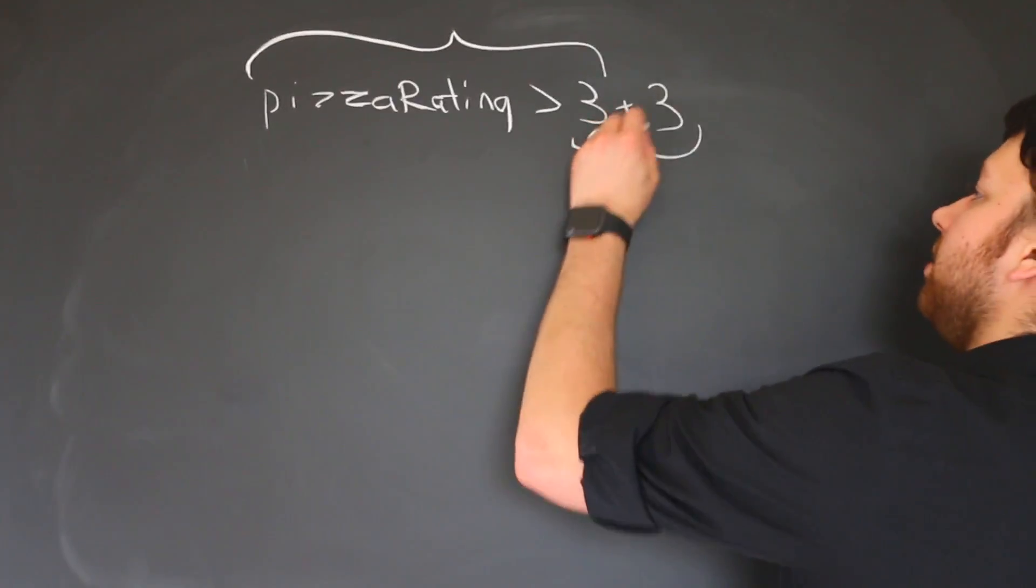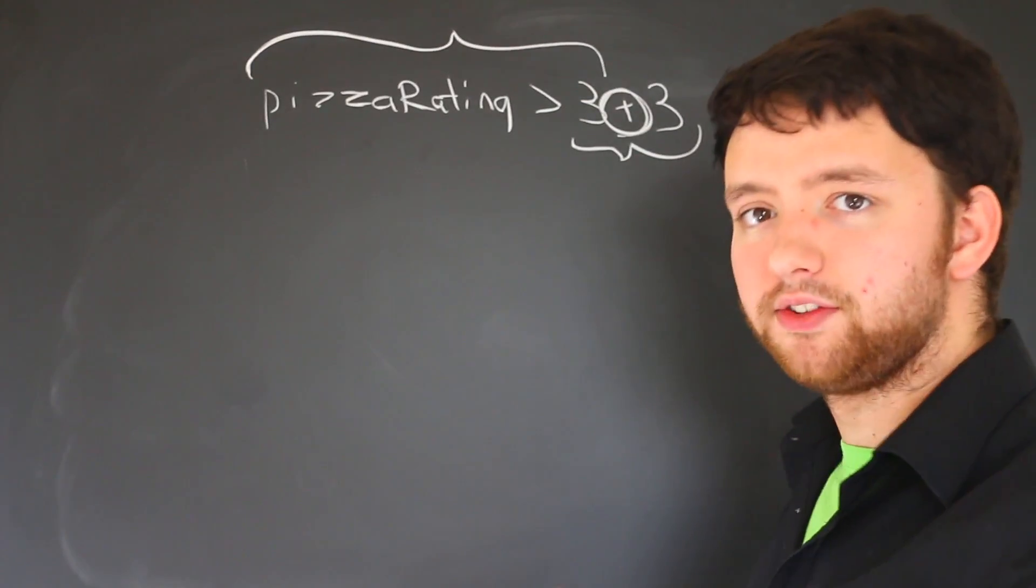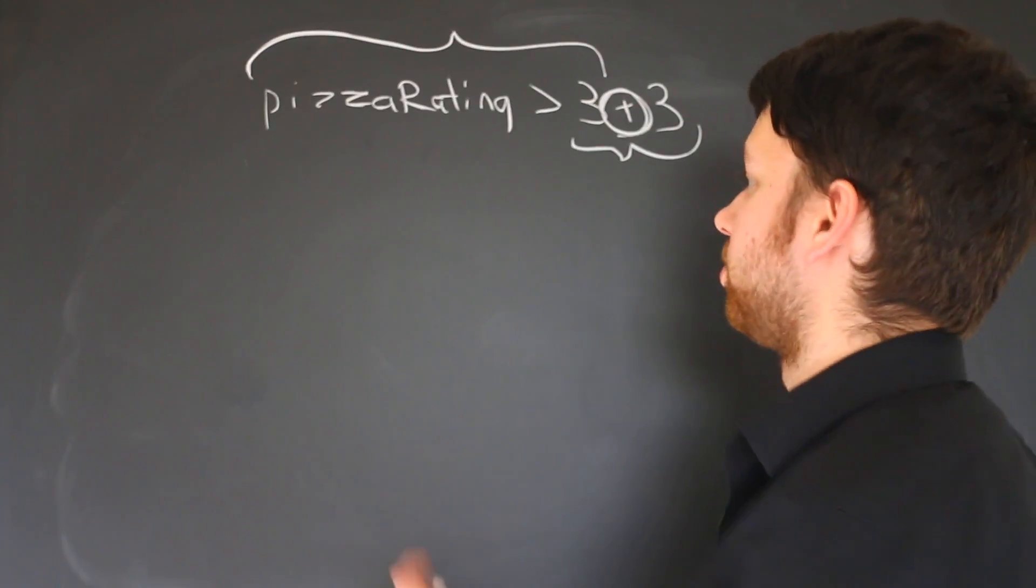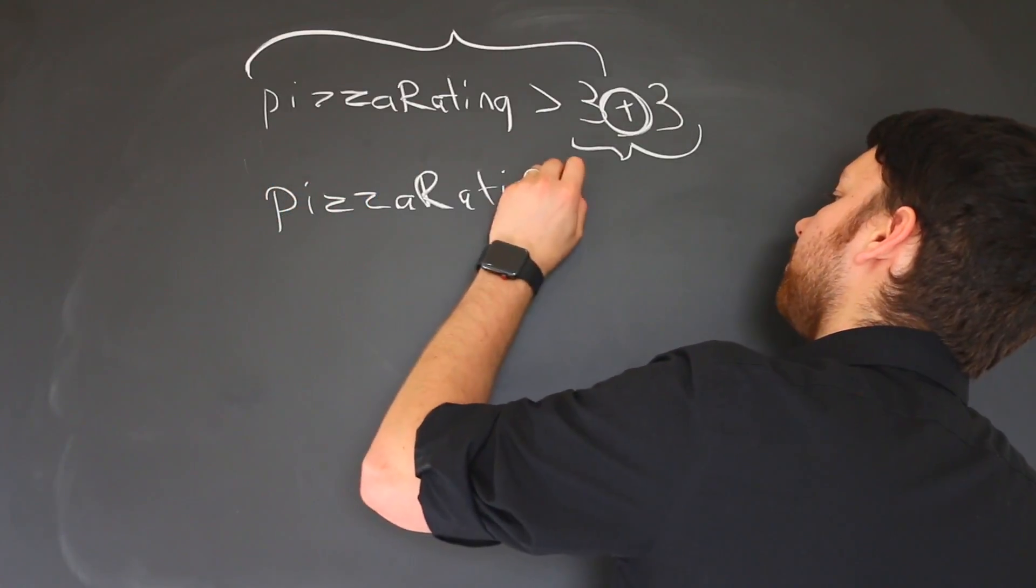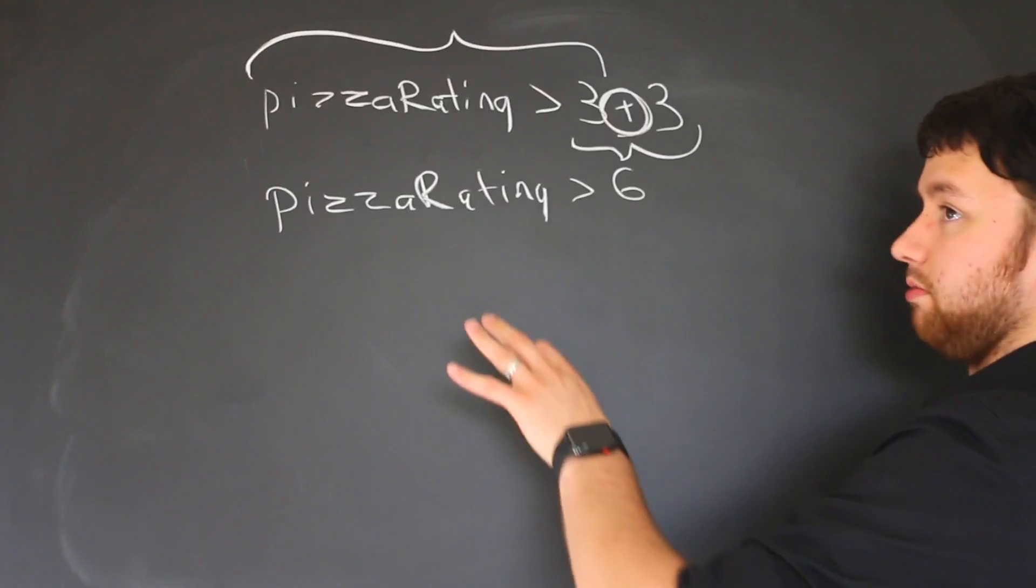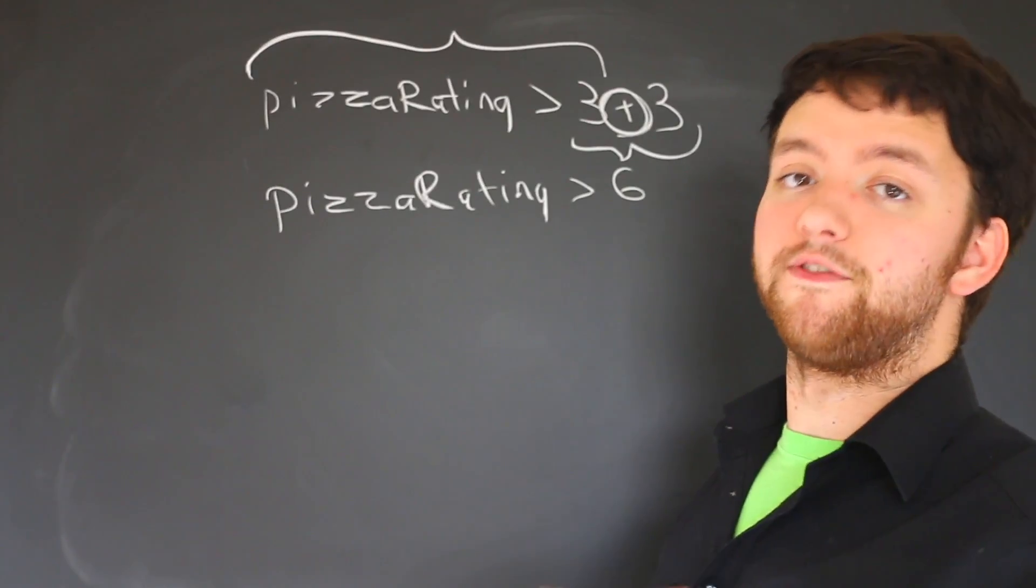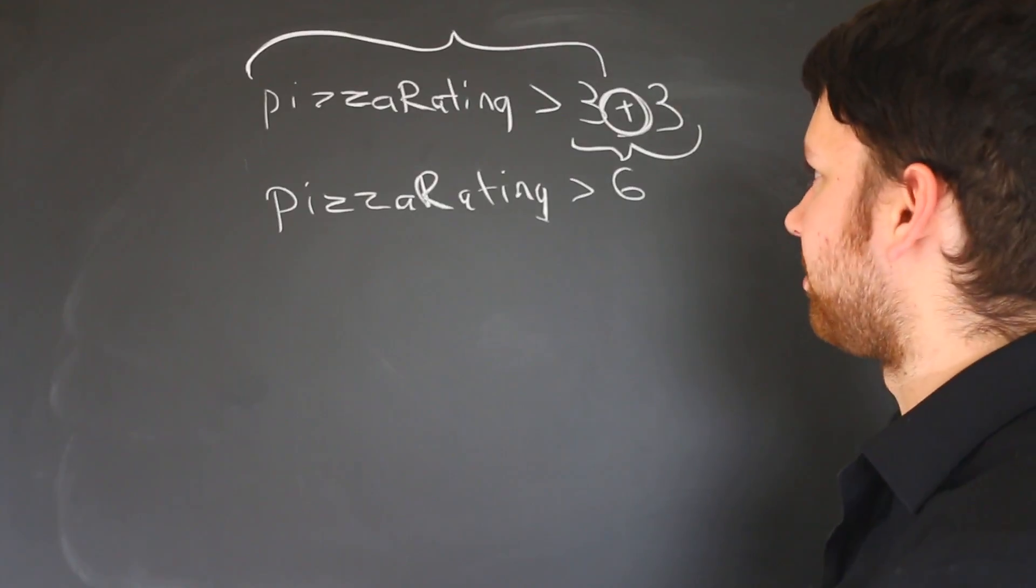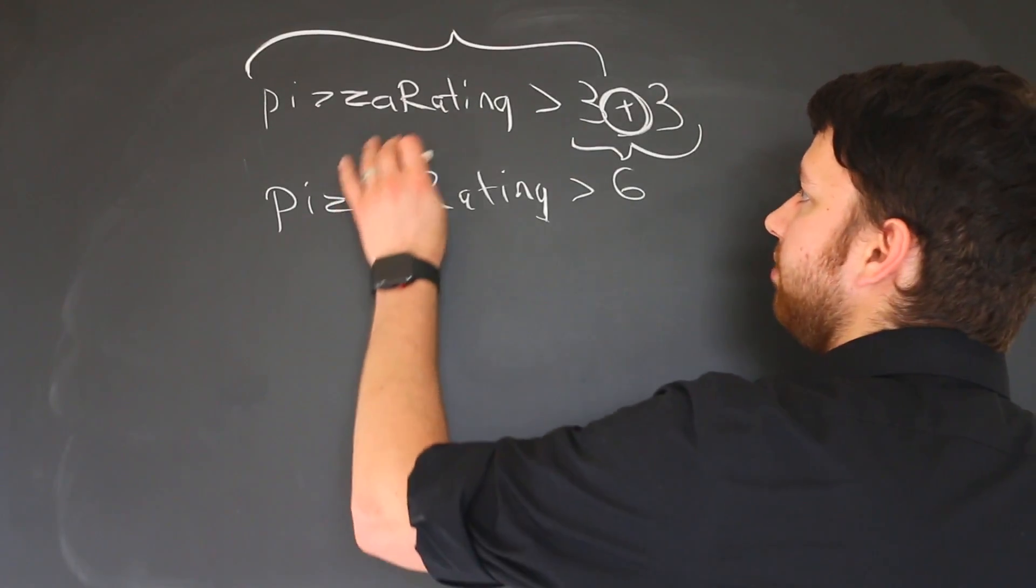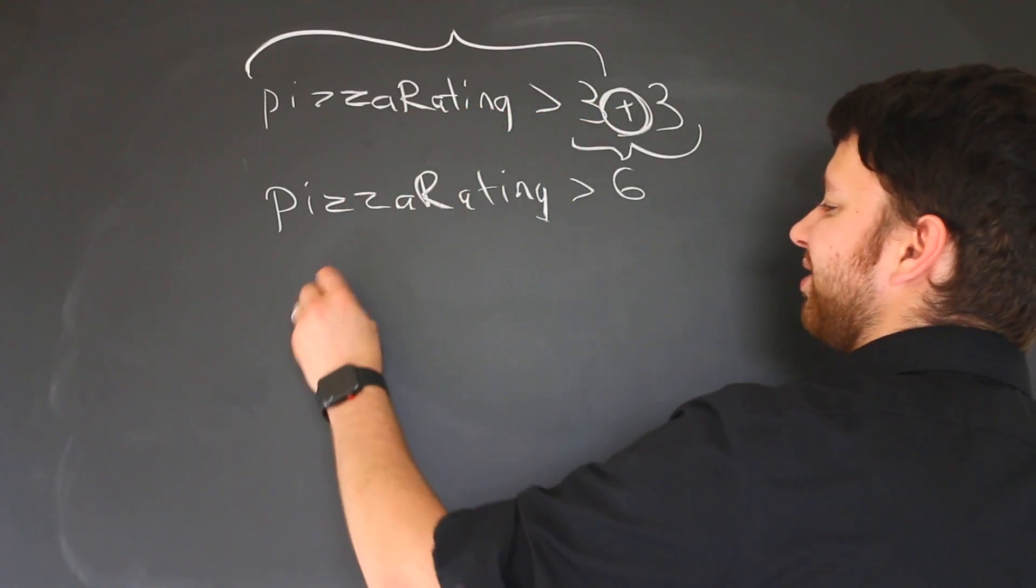Which one actually happens is dependent upon the operator precedence. So in this situation, the plus sign has a higher precedence, which means it happens first. So this is actually going to get evaluated to pizzaRating greater than six, which will then ultimately be evaluated to true or false depending on the value of pizzaRating. And that makes sense because if you think about it, if you did pizzaRating greater than three, let's just say it was true.